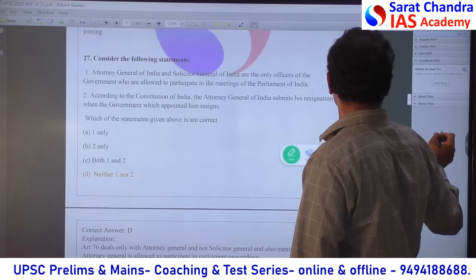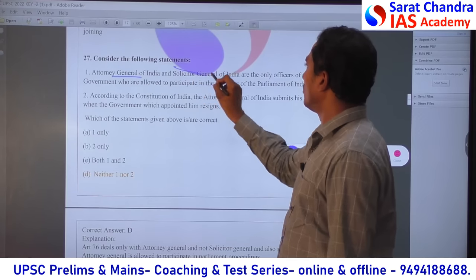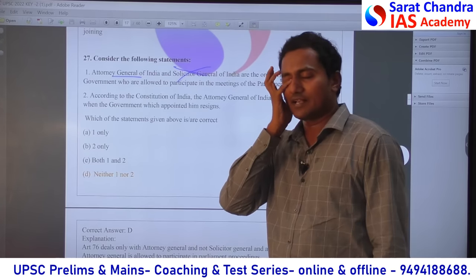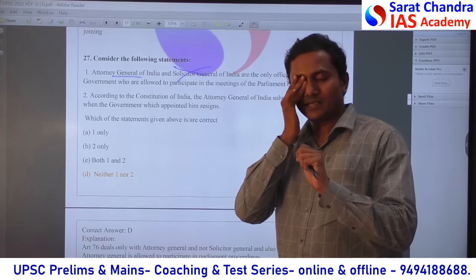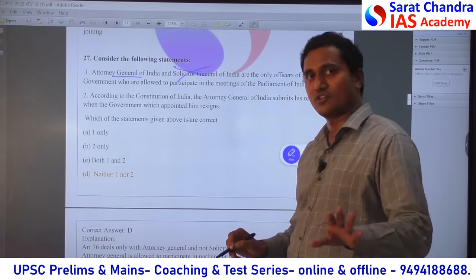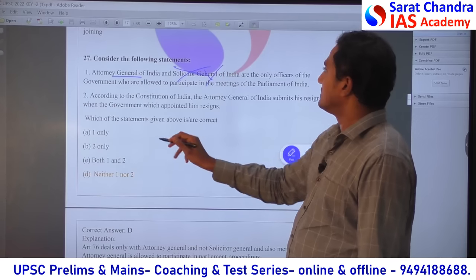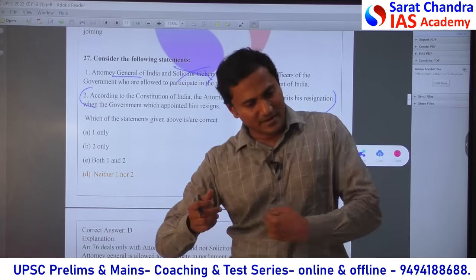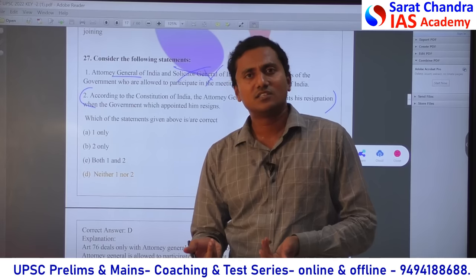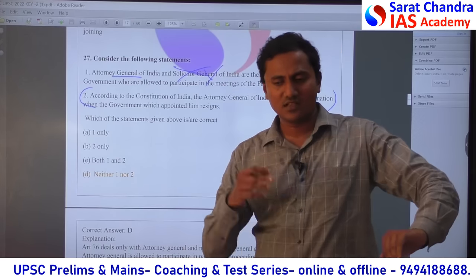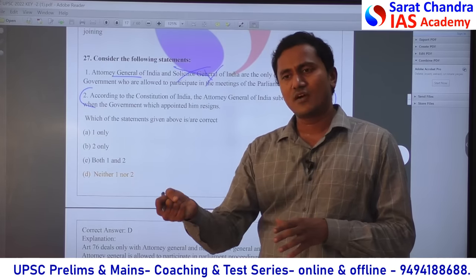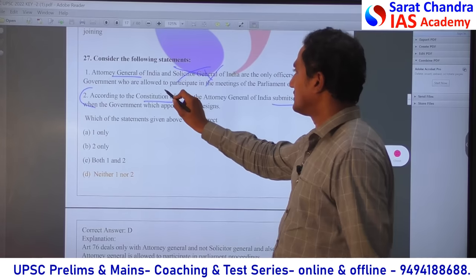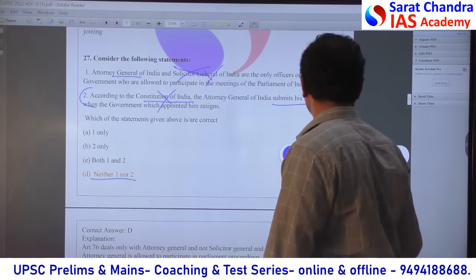Regarding the Attorney General and Solicitor General — as per Laxmikanth, the Attorney General has the right to participate in any meeting of Lok Sabha and Rajya Sabha, sit there, discuss, and listen to proceedings. But the Solicitor General has no such right. So statement 1 is wrong. Regarding statement 2 — according to the Constitution of India, there is no law saying that if the government resigns, the Attorney General must resign. Generally they do resign because they are appointed by the government, but there is no constitutional mandate. So statement 2 is also wrong. The answer is neither of them — neither one nor two.